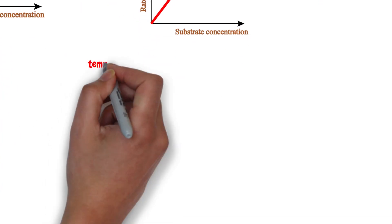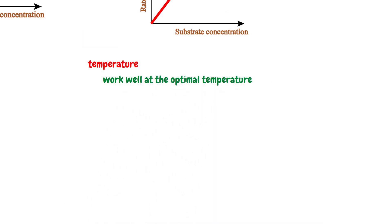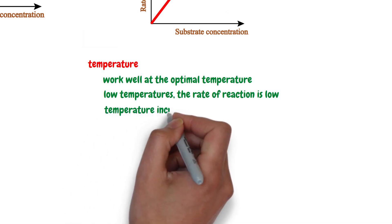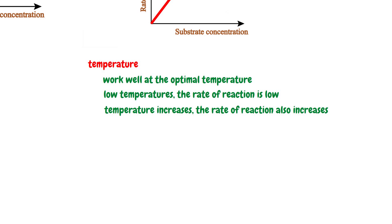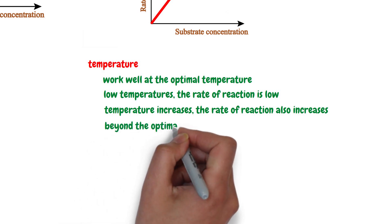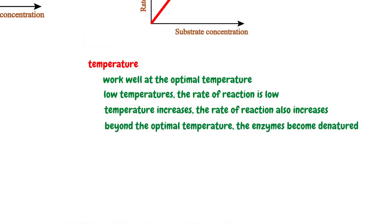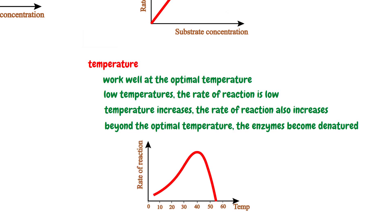The third factor is temperature. Enzymes work well at the optimal temperature, which has a range of 37 to 40 degrees Celsius. At low temperatures, the rate of reaction is low because enzymes are inactive. As the temperature increases, the rate of reaction also increases because enzymes gradually become active until the optimal temperature is reached. Beyond the optimal temperature, the enzymes become denatured — a denatured enzyme loses its shape and its function. As shown by this graph, beyond about 40 degrees Celsius, there is a sharp decrease in the rate of reaction because enzymes become denatured and can no longer catalyze the reaction.